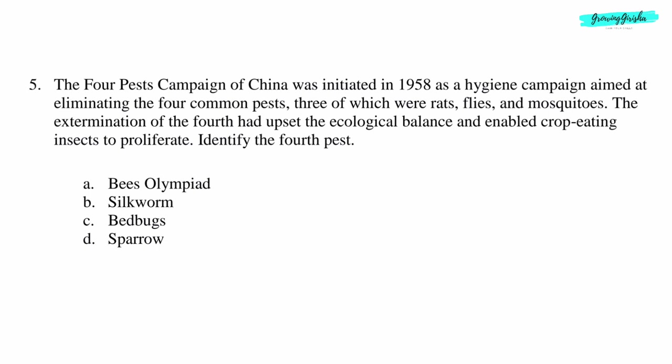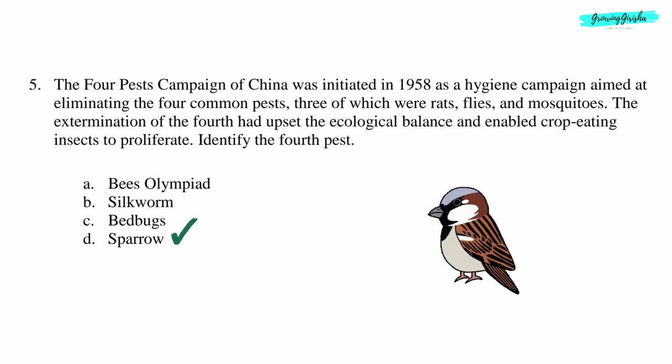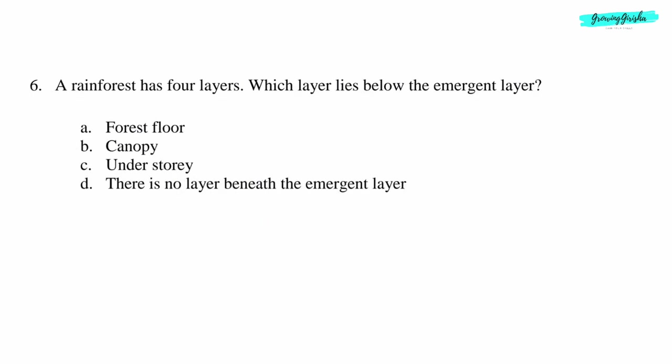The extermination of the fourth pest had upset the ecological balance and enabled crop-eating insects to proliferate. Identify the fourth pest. Option D: Sparrow.